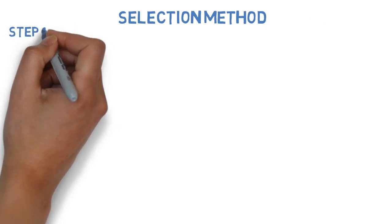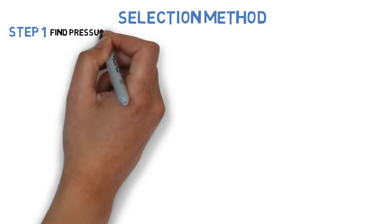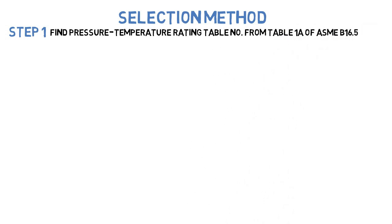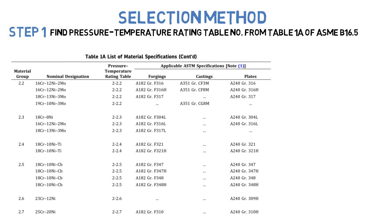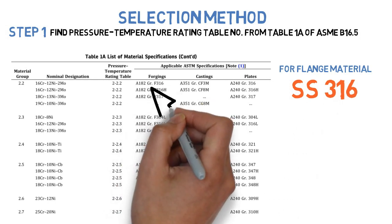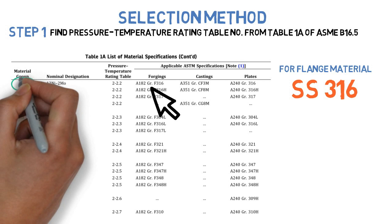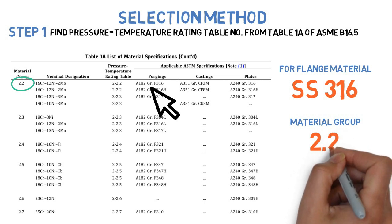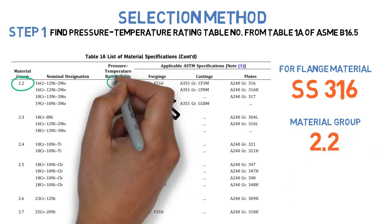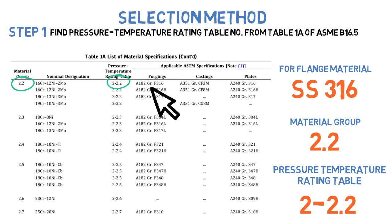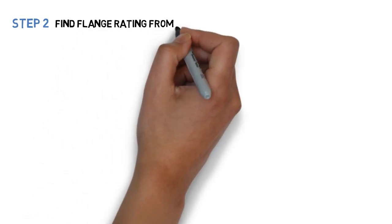Step 1: Find the pressure-temperature rating table number from Table 1A of ASME B16.5. For flange material SS 316, the material group is 2.2. Therefore, the pressure-temperature rating table number is 2-2.2.